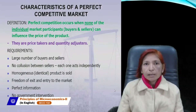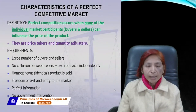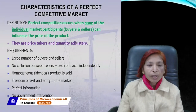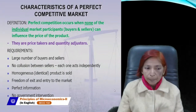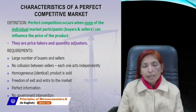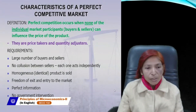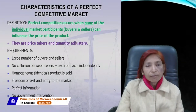One more assumption is that transportation cost is absent under this market, because in perfect competition the price remains always uniform or the same. When the product is the same, price will also remain the same, so transportation costs are assumed to be absent. This assumption is also unrealistic, but when discussing perfect competition you must include all these assumptions as stated by economists.